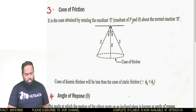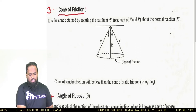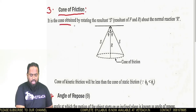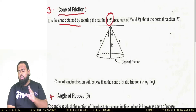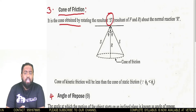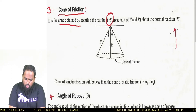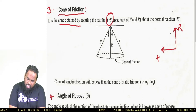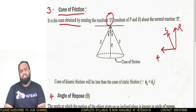In continuation of this topic, another very important topic is the cone of friction. The cone of friction is the cone obtained by rotating the resultant — the resultant of friction and reaction as discussed in the angle of friction concept. If the reaction is going up and friction is going left, the resultant between these two lies in that quadrant, considered as S.